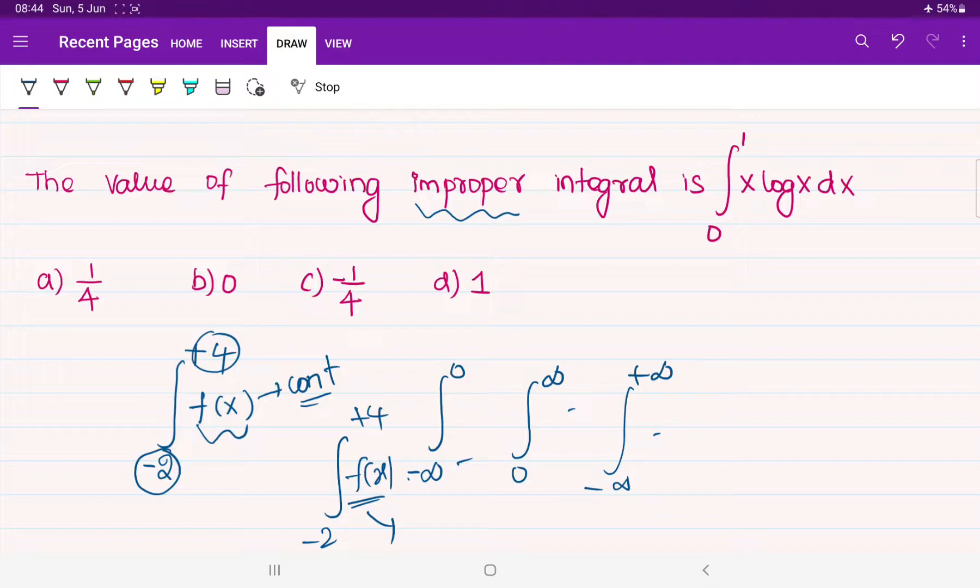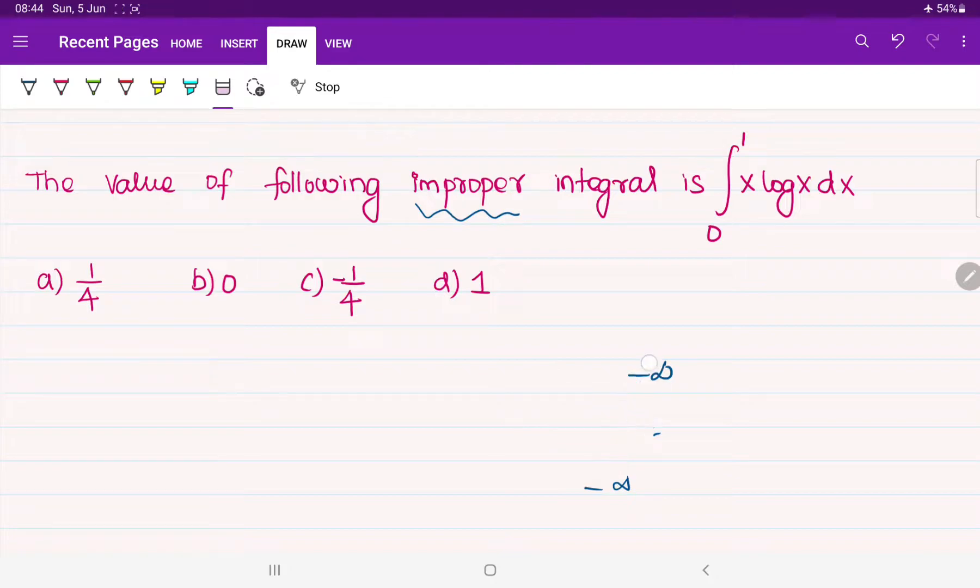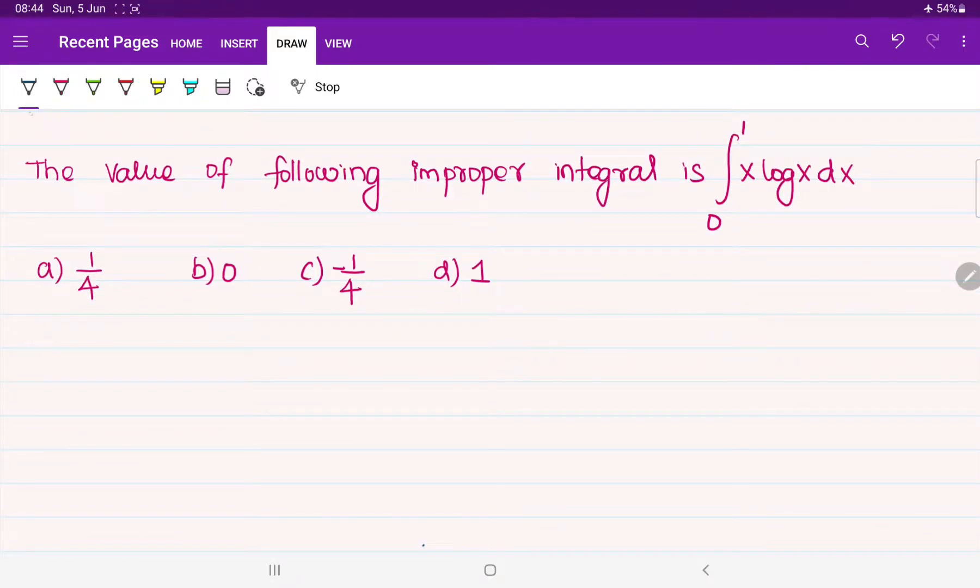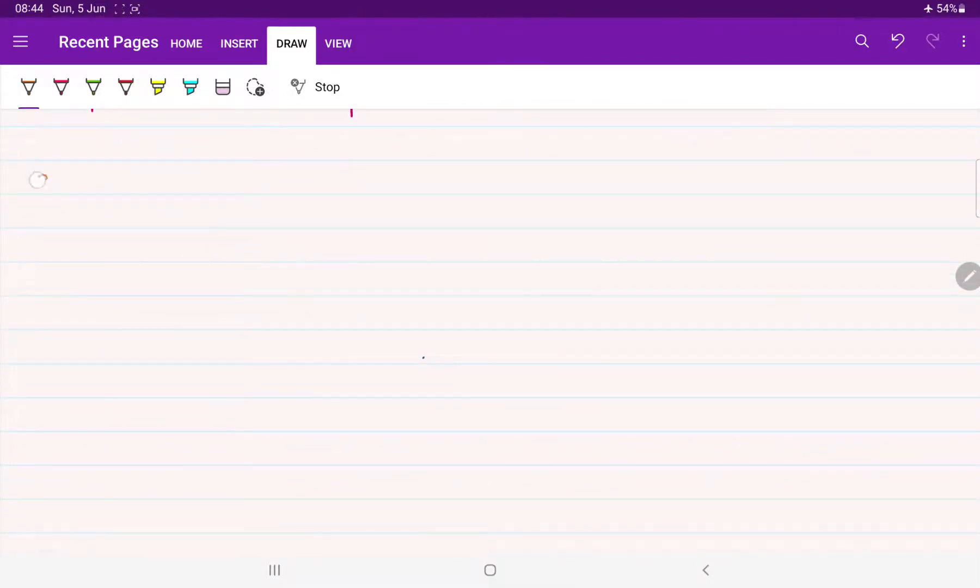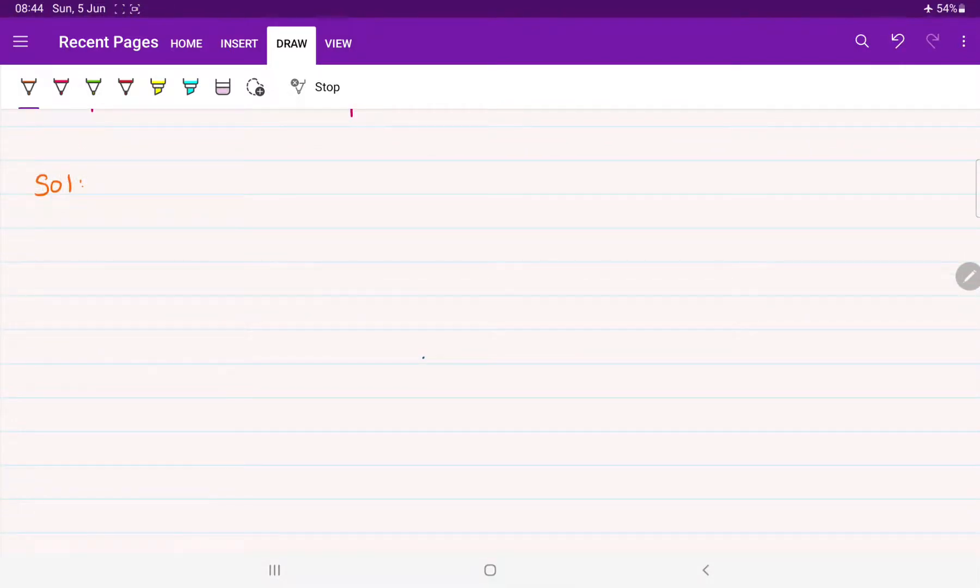In our case, see there, limit is given as finite limit only. If you observe clearly, 0 to 1 is the specified limit. But the problem is, why they are calling it as improper integral? The function is not having continuity. That is why they are calling it as improper integral. I hope now you may have some clarity about this. I have not given elaborate explanations, but I have given the required things.